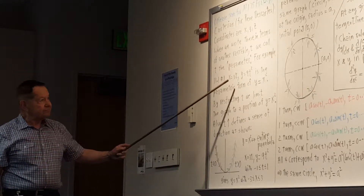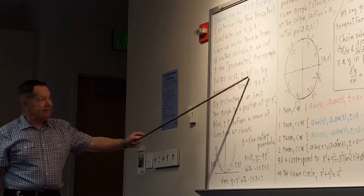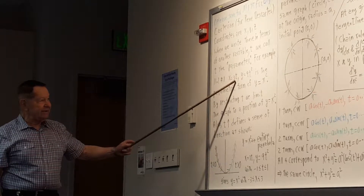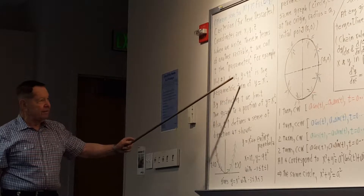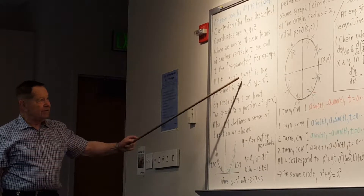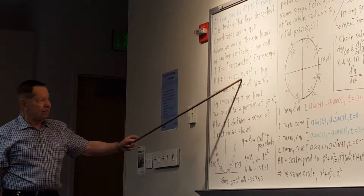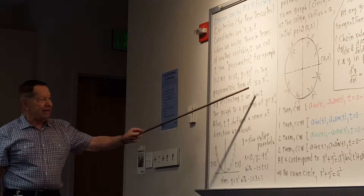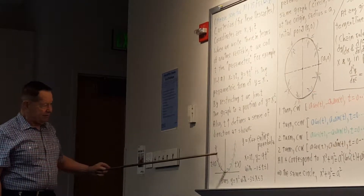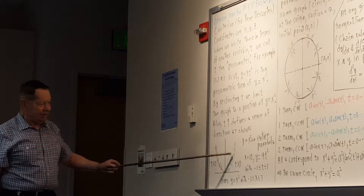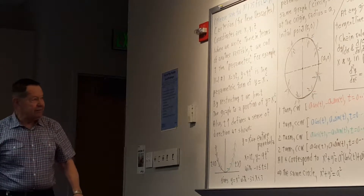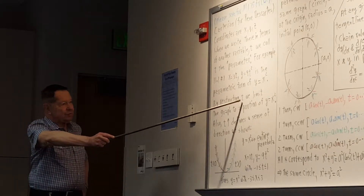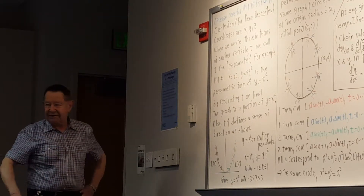Notice that 9T² is (3T)², so another way to think of this is Y equals X squared. If you think of it that way, you expect to see something that looks like a parabola. The difference is that you can restrict T — so instead of having the entire parabola going on forever, you have only a portion of it.